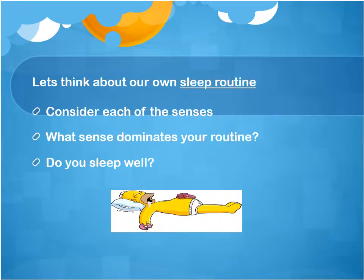Within each of those areas — if we take something simple like looking at our own sleep routine and how we achieve good sleep hygiene — it will help us to understand how those different senses can affect us. For example, visual stimulation: people who watch TV before they go to bed can often have poor sleep.